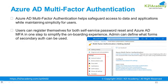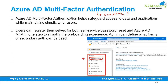Azure AD Multi-Factor Authentication ensures you authenticate with two or more types of authentication. You can configure account lockout settings and unlock accounts. MFA helps safeguard access to data and applications while maintaining simplicity for users. Users can register for both self-service password reset and Azure AD MFA in one step to simplify the onboarding experience, and admins can define what forms of secondary authentication can be used.